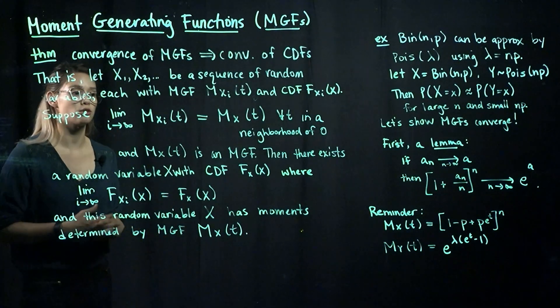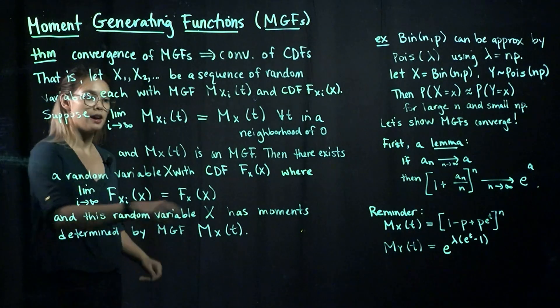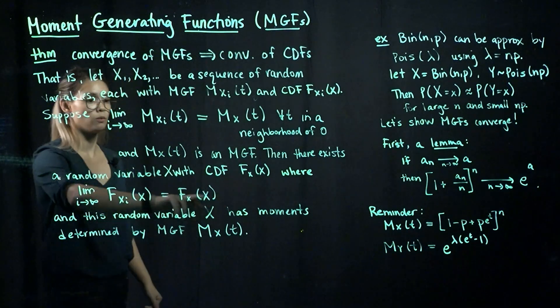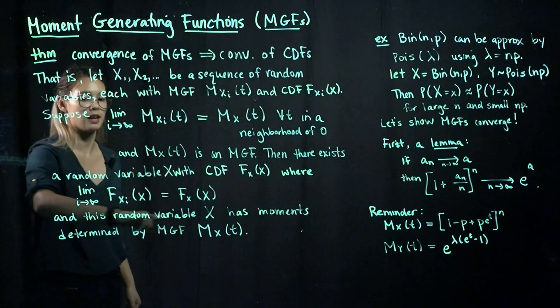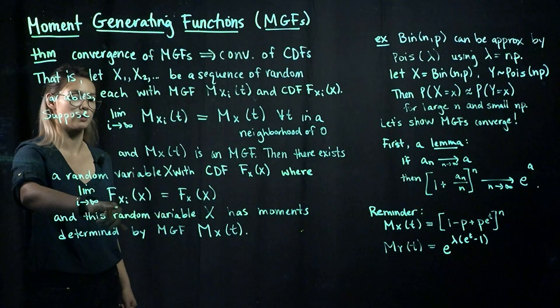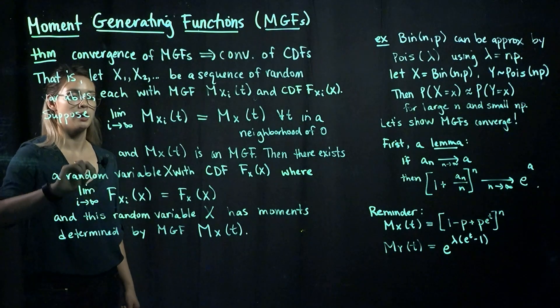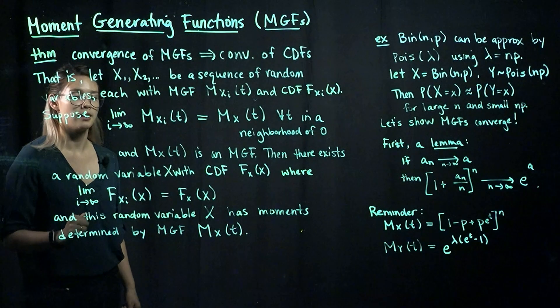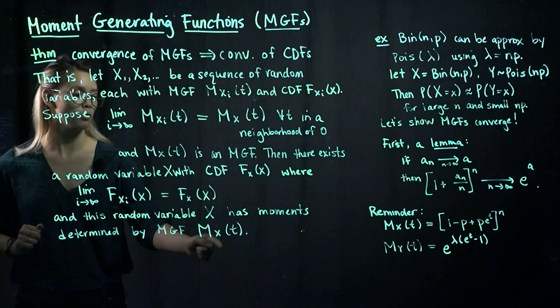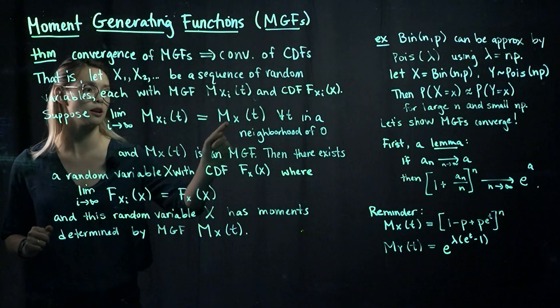If this is true, then there exists some random variable, we could call it x, with CDF f sub x of x, where this CDF is defined as the limit of these CDFs from our sequence of random variables. And this random variable here will have moments defined by the MGF m sub x of t, in other words, the limiting MGF here.